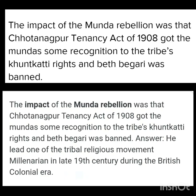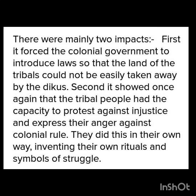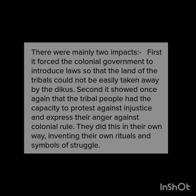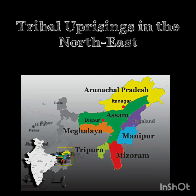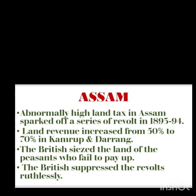The Chotanagpur Tenancy Act assured the Mundas their customary rights and abolished begar, or forced labor. The government also attempted to gain a better understanding of the tribals' way of life. Officers were stationed close to the Munda villages to address their grievances quickly. Moving to tribal uprisings in the northeast — in Assam, the British imposed an abnormally high land tax in Kamrup and Darrang, where land revenue was increased from 50 percent to 70 percent.